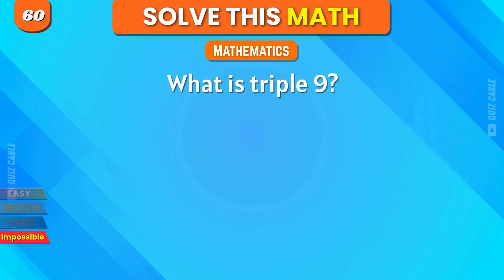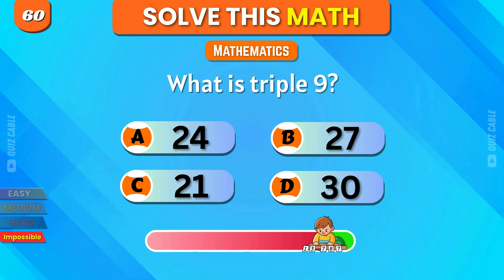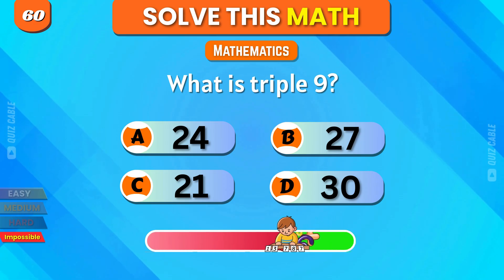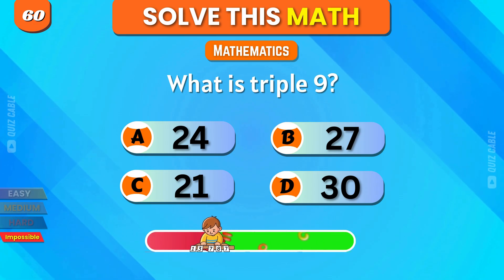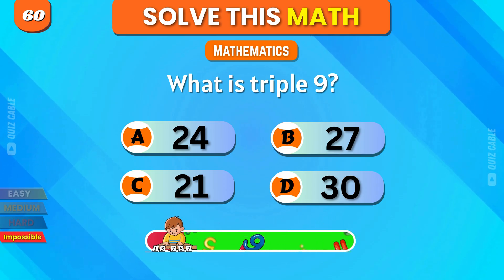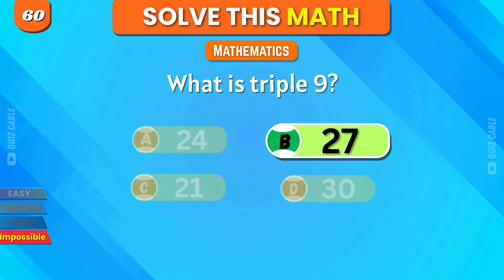What is triple 9? 24, 27, 21, 30. Correct, 27.